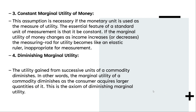The third assumption is constant marginal utility of money. This assumption is necessary if monetary units are used as the measure of utility. The essential feature of a standard unit of measurement is that it should be constant. Every unit of measurement must be constant — for example, just as we use a kilogram as a fixed standard unit.